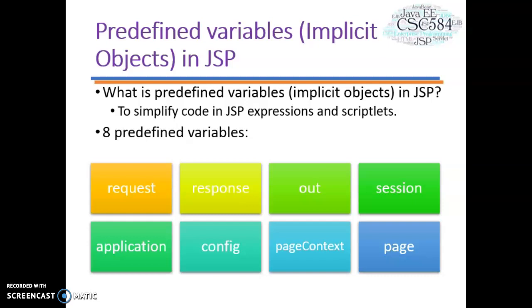The eight implicit objects are: Request, Response, Out, Session, Application, Config, PageContext, and Page.